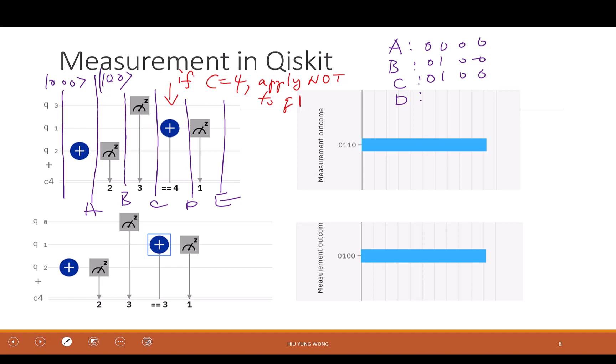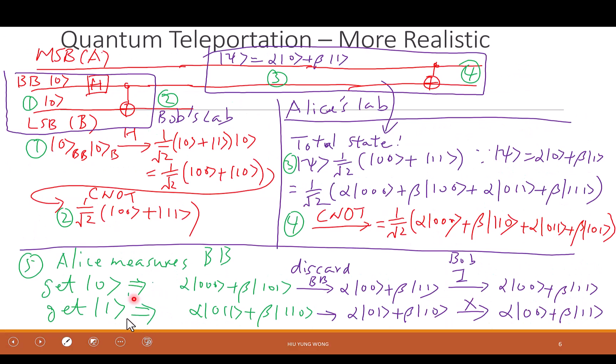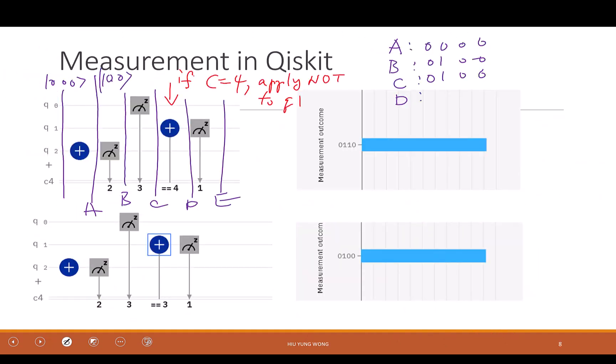This one is saying that if your classical register equals to 4, apply the NOT gate. 0, 0, 0, 0. If C equals to 4, apply the NOT gate. So if C equals to 4, apply the NOT gate. It's like based on the classical information, you apply the NOT. It's just like here. Alex called Bob. If I get 1, you apply the NOT gate. Otherwise, do not apply. Is this 4? It's 4. So we are going to apply a NOT gate.